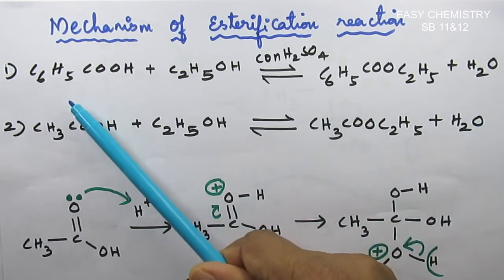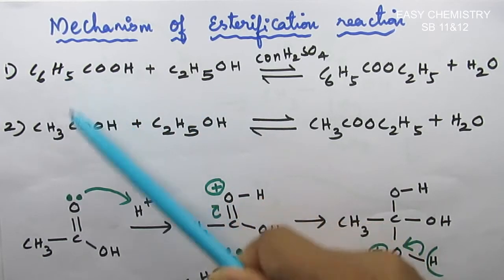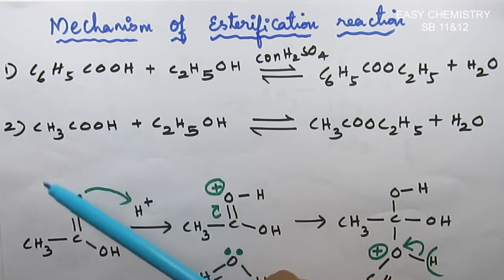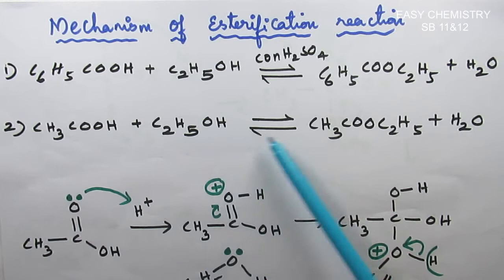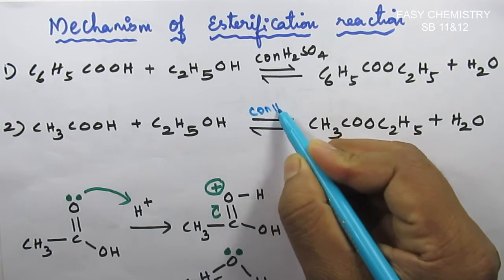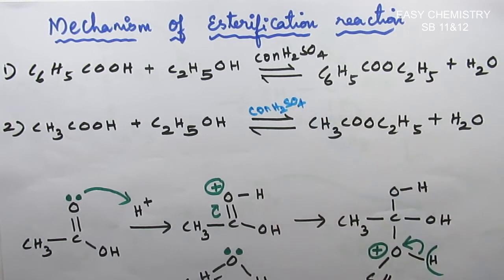Now, we are going to talk about acetic acid. It reacts with ethyl alcohol, C2H5OH. In this reaction, in the presence of concentrated H2SO4, concentrated sulfuric acid, it is a very good dehydrating agent. What we do is we remove water molecules from the reactant side.